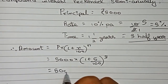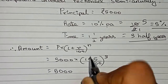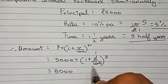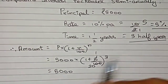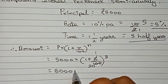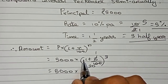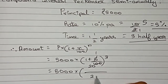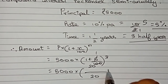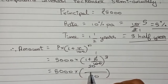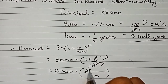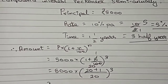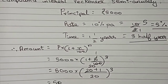Simplifying inside the bracket: 5/100 reduces to 1/20. Then 1 + 1/20, taking LCM of 20, gives (20 + 1)/20, which is 21/20. So we have 5000 × (21/20)³.